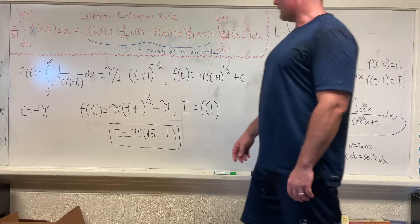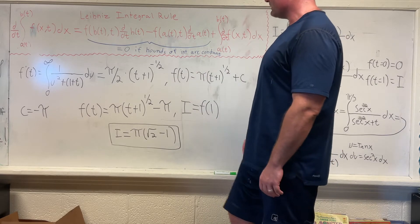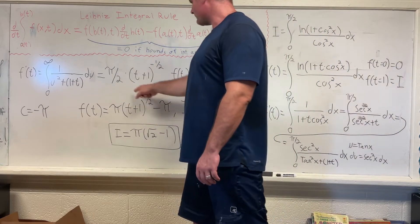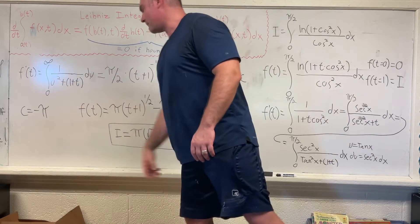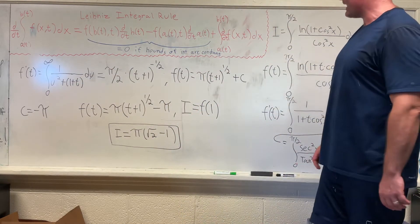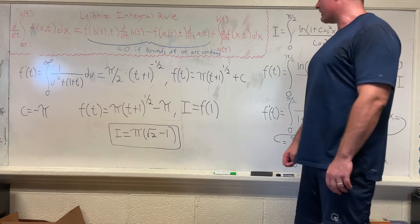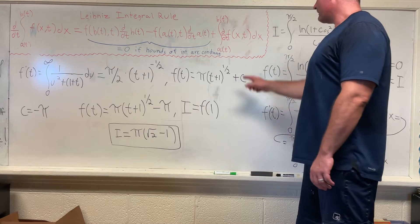And then going from f'(t) to f(t), which is what we want to do, requires integration. So we integrate this with respect to t and we integrate f'(t) with respect to t, giving us f(t) is equal to π times (t + 1)^(1/2) plus c.